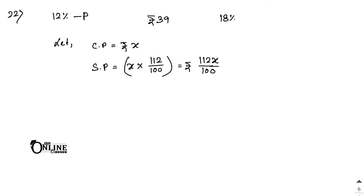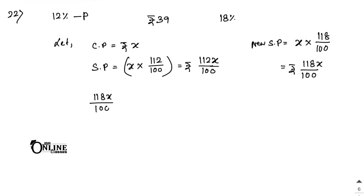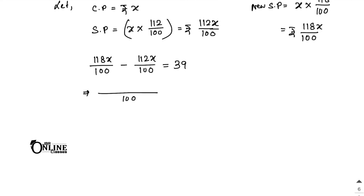For 18% profit, new SP equals 118x by 100. According to the problem, 118x by 100 minus 112x by 100 equals 39. With 100 as LCM: 118 minus 112 x equals 3,900, so 6x equals 3,900, therefore x equals 650.